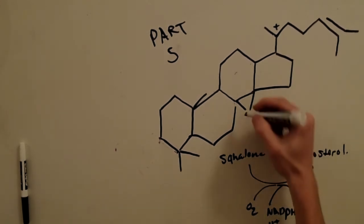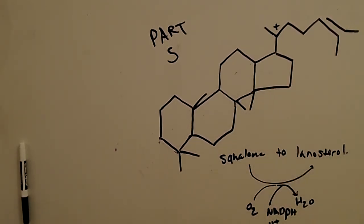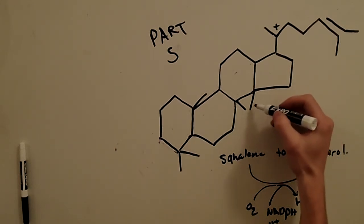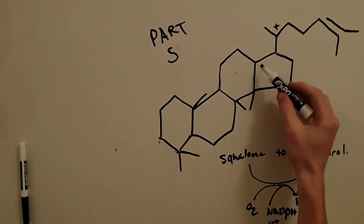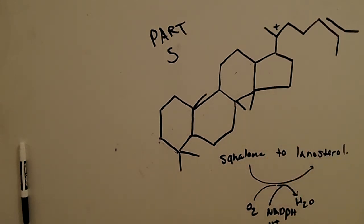To get to lanosterol what's going to happen is these methyls are going to shift up and there's going to be a pi bond formed there.